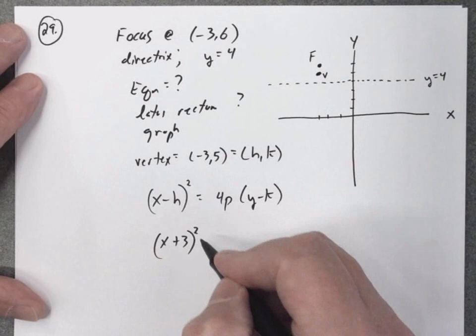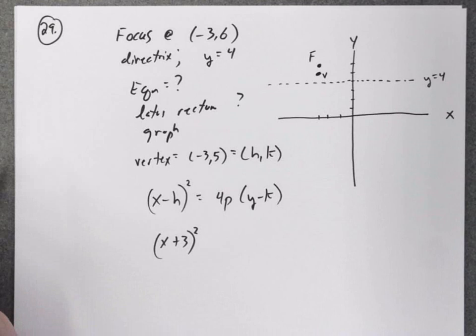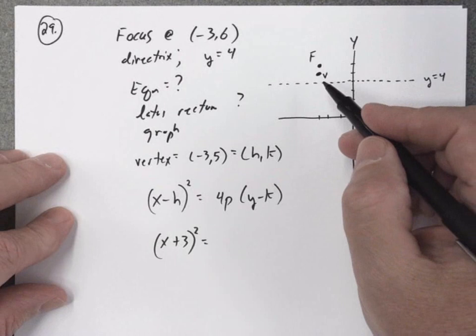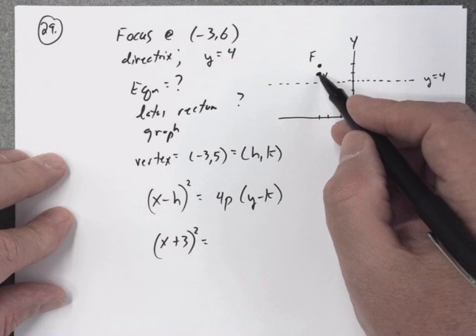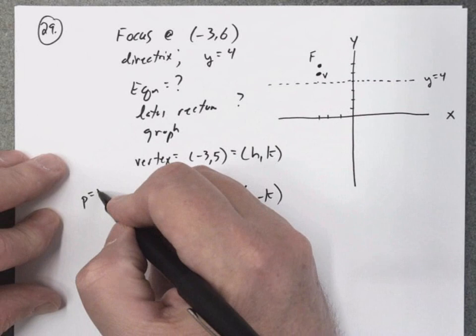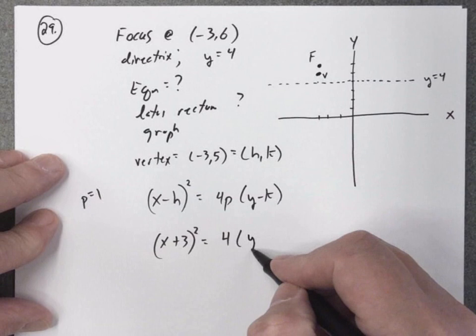So I'm going to subtract a negative 3, that's going to be (x + 3)² = 4p(y - k). Now p is the distance from the vertex to the focus and the distance from the focus to the directrix. Those are the same, and that's a distance p. It's pretty easy to see here, p is going to be 1.